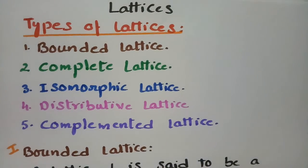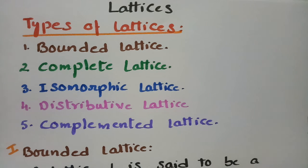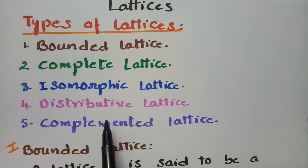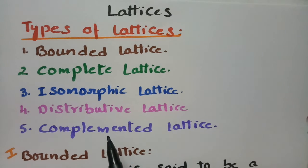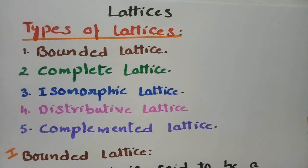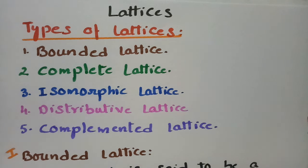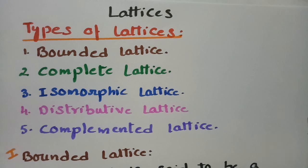These are all the definitions for the five important types of lattices: bounded, complete, isomorphic, distributive, and complemented. Hope you got a clear idea. Please go through all the videos in the playlist for more examples on distributive and complemented lattices. Thank you, please subscribe, follow the playlist, share with your friends, and leave a comment below.